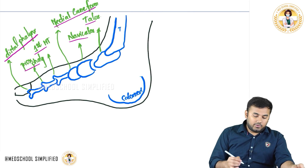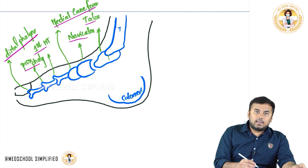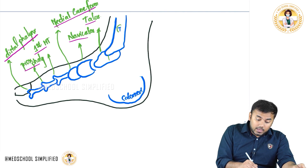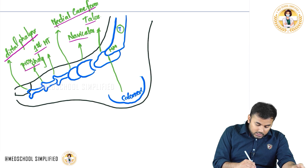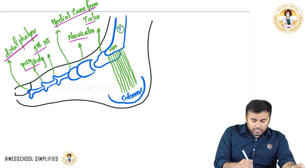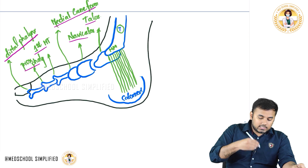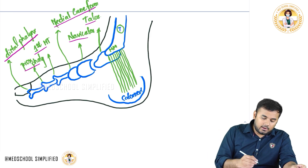The tibia bone has the medial malleolus. From the medial malleolus till the calcaneus you have got this retinaculum over here and this retinaculum is called flexor retinaculum. Let us see what are the structures that are passing beneath the flexor retinaculum.